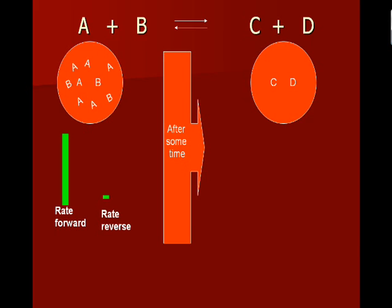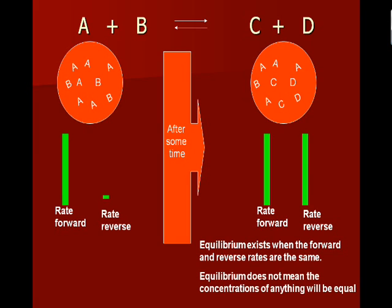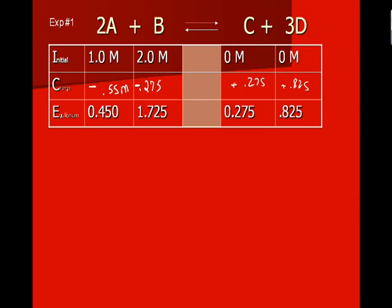After some time, as A and B has turned into C and D, the forward rate and the reverse rate will be equal. Equilibrium exists when the forward and reverse rates are the same. It's important to keep in mind that equilibrium does not mean that the concentrations of anything will be equal. It's that the forward and reverse rates are equal.